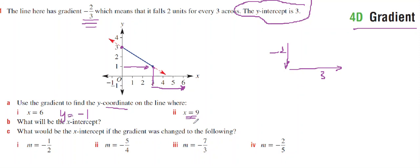And to get to 9, I need to go across another 3. So if I go down 2, then across another 3, I'll be at 9. And my y-value would now be another 2 down, so y would be equal to negative 3.